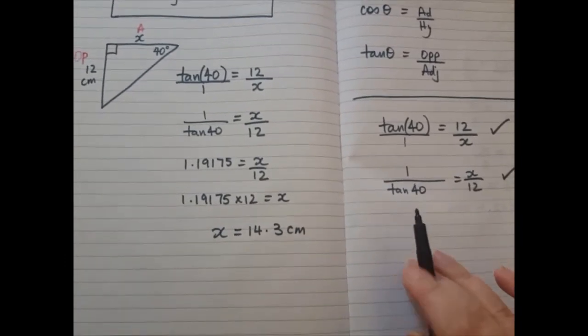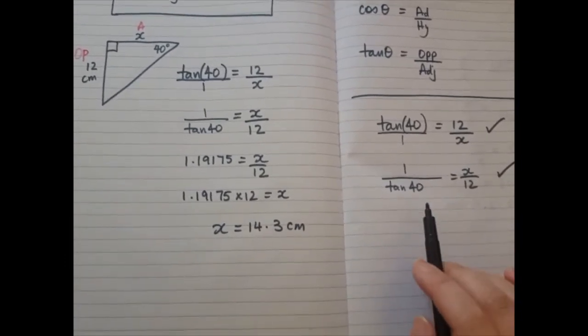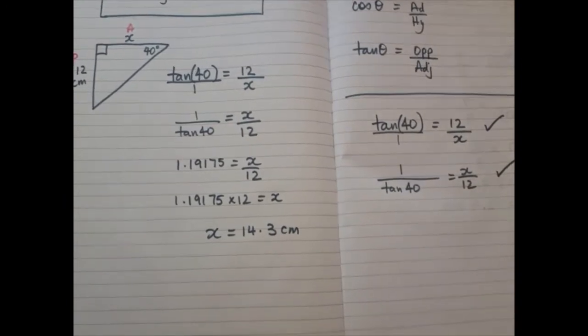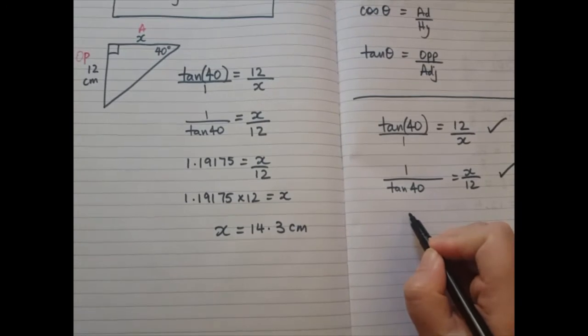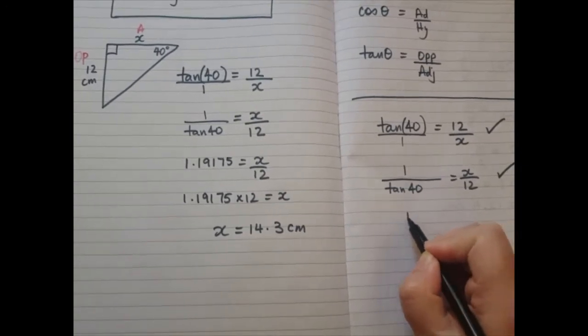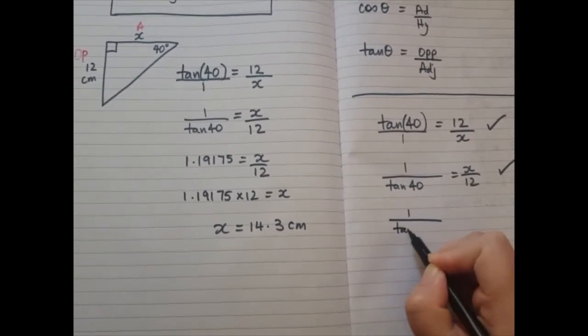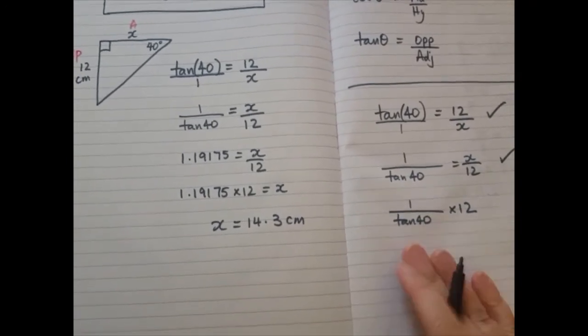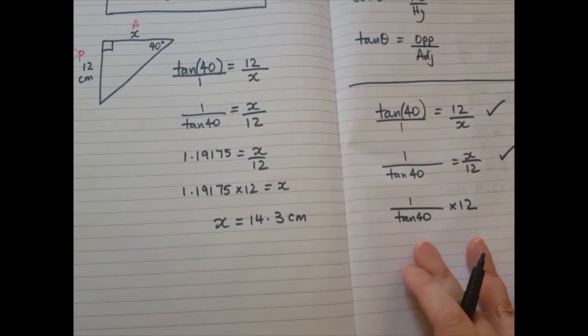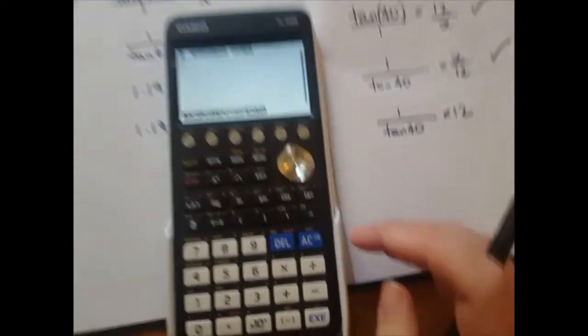Now from this step onwards you can do it in your calculator, and what you're typing in your calculator is this. You can type in 1 over 40—sorry, 1 over tan 40—times by 12. Now if you type in your calculator you should write it down. So we're going to write this down, and on your calculator you can do it like this.